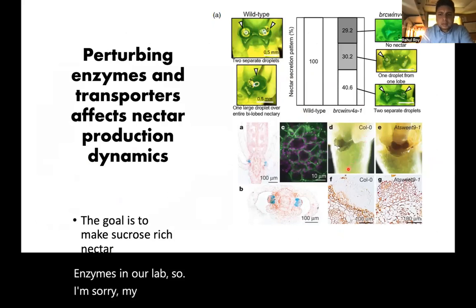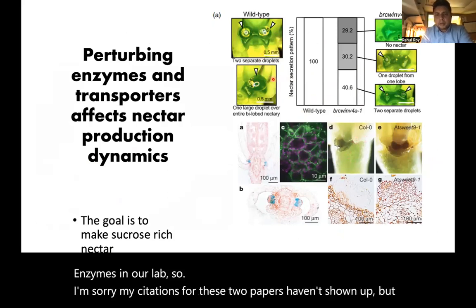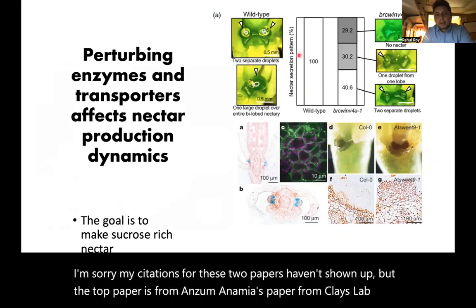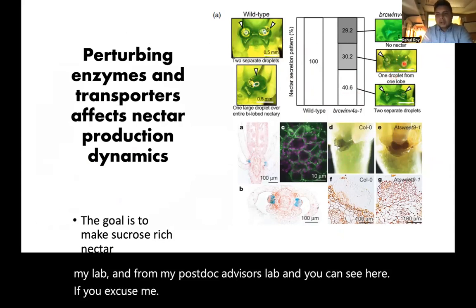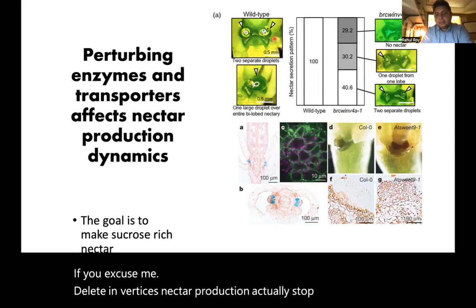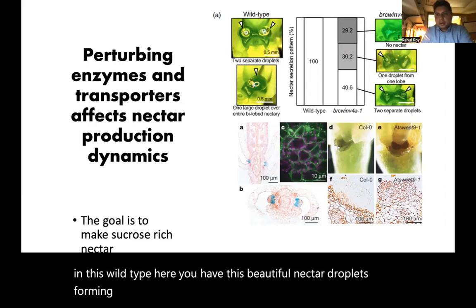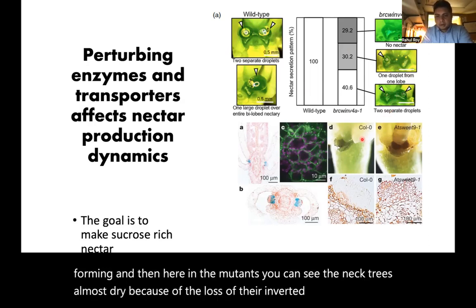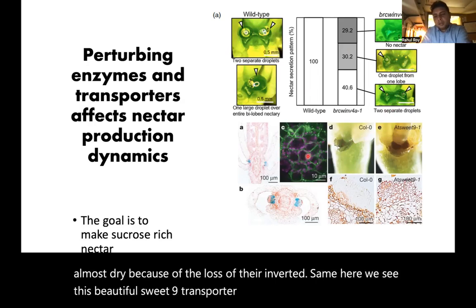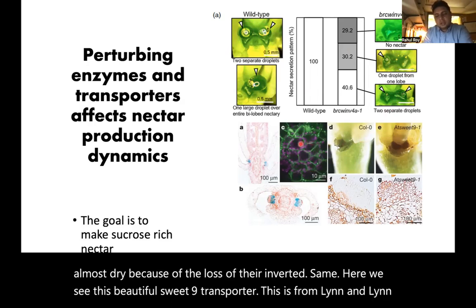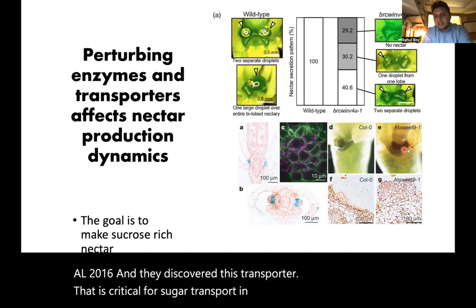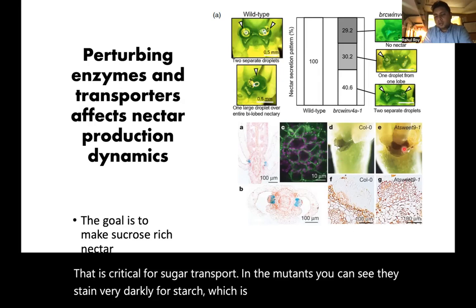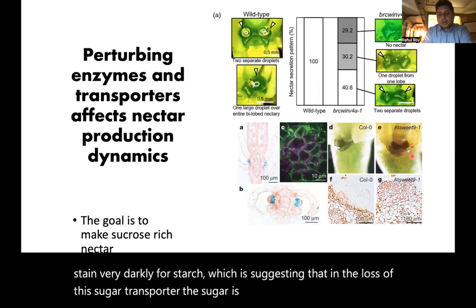Other enzymes such as invertases kick in and drive the breakdown of sucrose to glucose and fructose, which keeps the osmoticum such that nectar oozes out. Biogenetic studies have allowed us to perturb some of these invertase enzymes. From Anzu Minami's paper from Clay's lab — if you delete invertases, nectar production actually stops. In the wild type you have beautiful nectar droplets forming, but in the mutants the nectar is almost dry. Similarly, the SWEET9 transporter from Lin et al. 2016 was found critical for sugar transport — in the mutants, starch stains very darkly, suggesting the sugar is stuck in the tissue as starch and is not getting broken down.